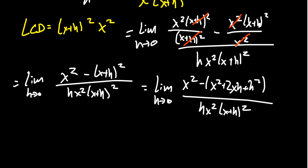And so you'll notice now there's an x² over here. There's a negative x² right here. Those terms are going to cancel each other out. And so who's left in the numerator? You're going to have this negative 2xh. Remember, I distributed that negative sign. You're going to have a negative h². And this sits above h, x², and (x+h)². Like so as h goes to zero.